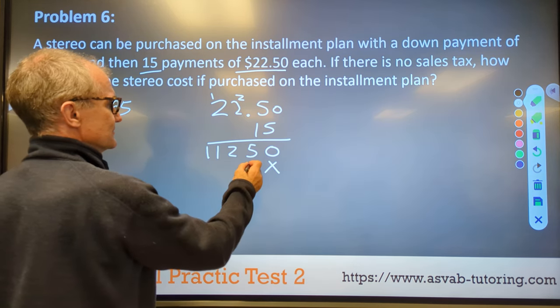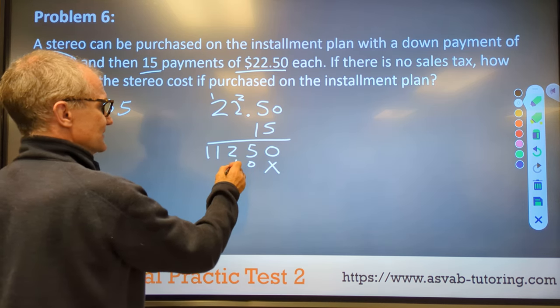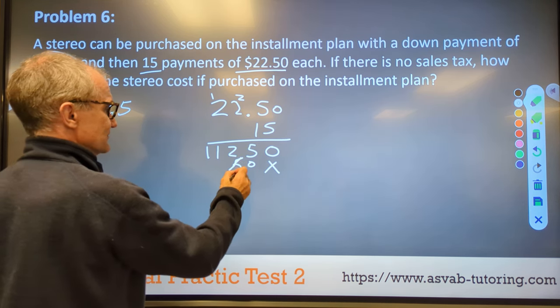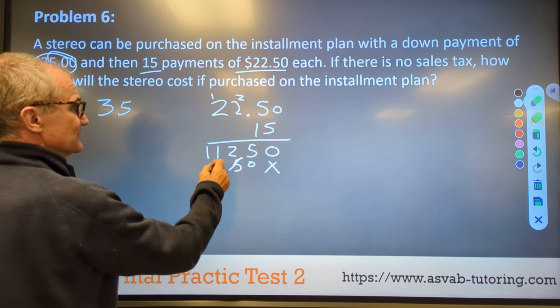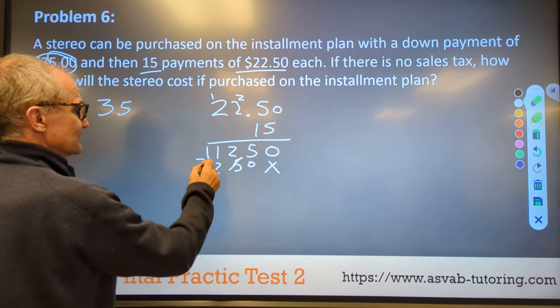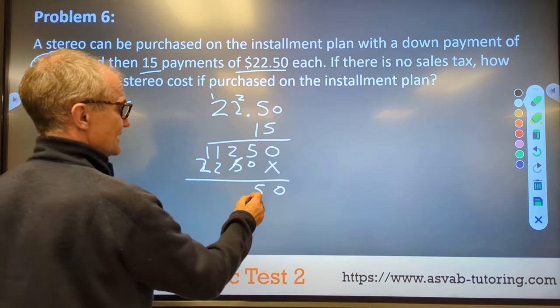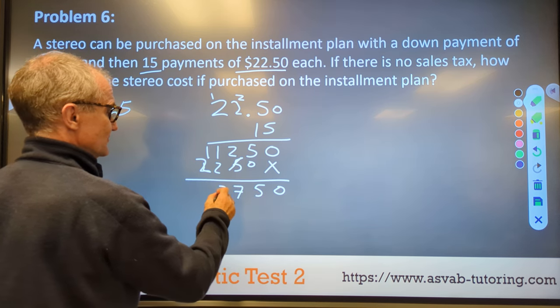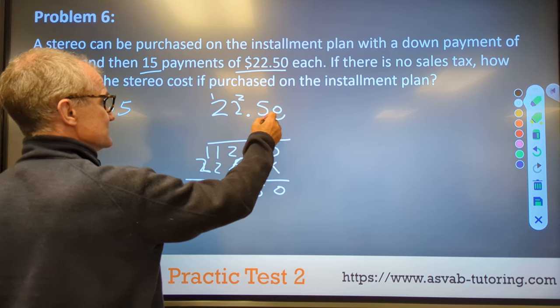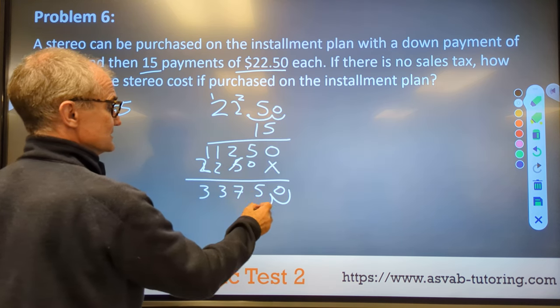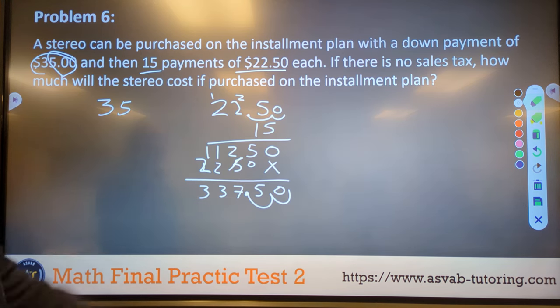One times zero. One times five. One times two. One times two. Then I'm going to add those together to get zero, five, seven, three, three. Decimal places over one, two. So I go over one, two. And I end up with $337.50.